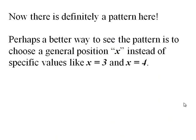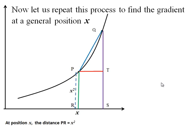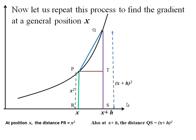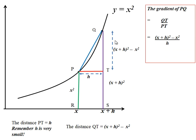Now, there's definitely a pattern here, and some students actually see it straight away. But a better way to see the pattern is to choose a general position X instead of specific values like X equals 3 and X equals 4. So, here's the same curve, and this is the general position X, and so the height there is X squared, Y equals X squared. Move along a distance H to X plus H, and the height there is X plus H squared.